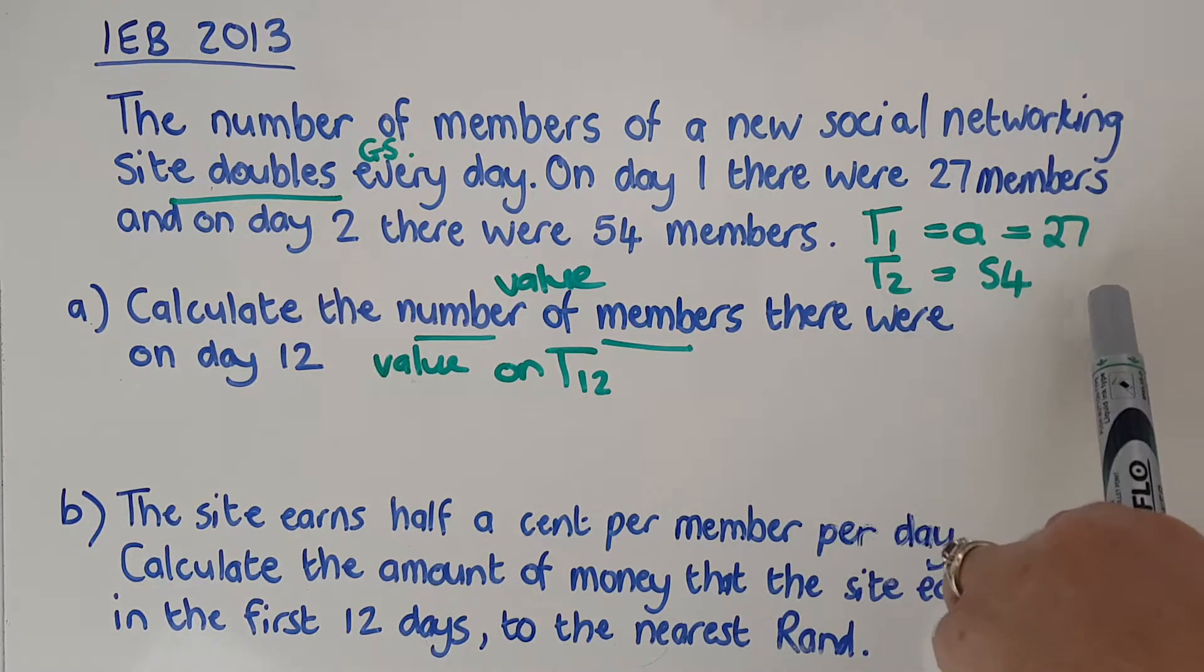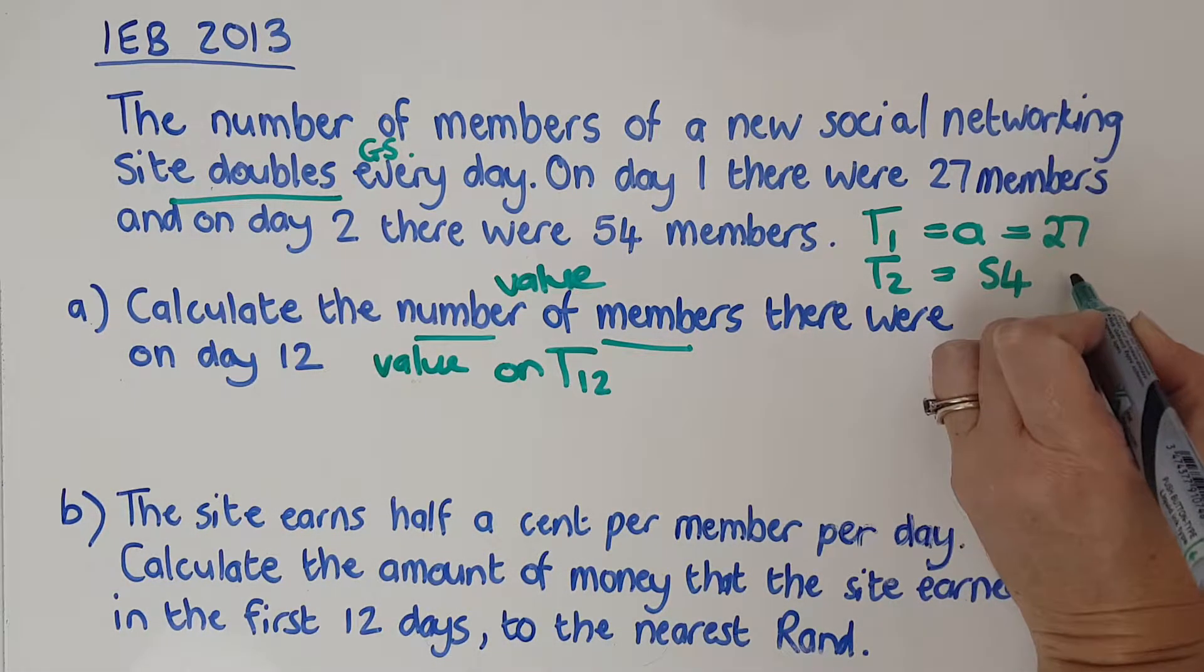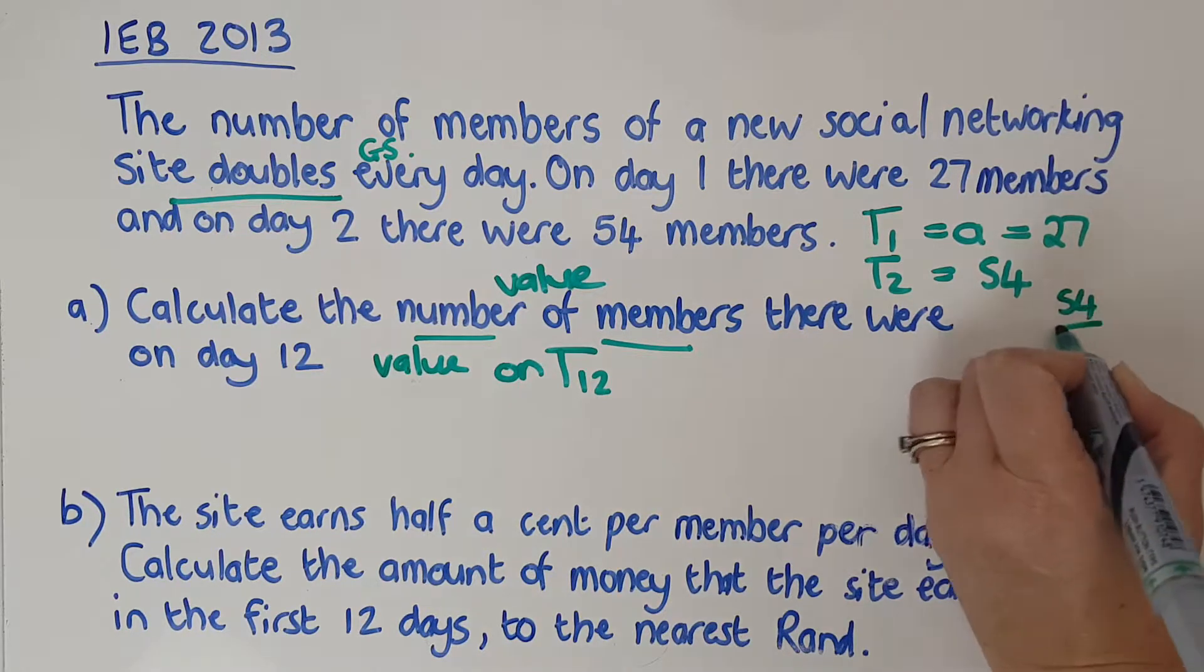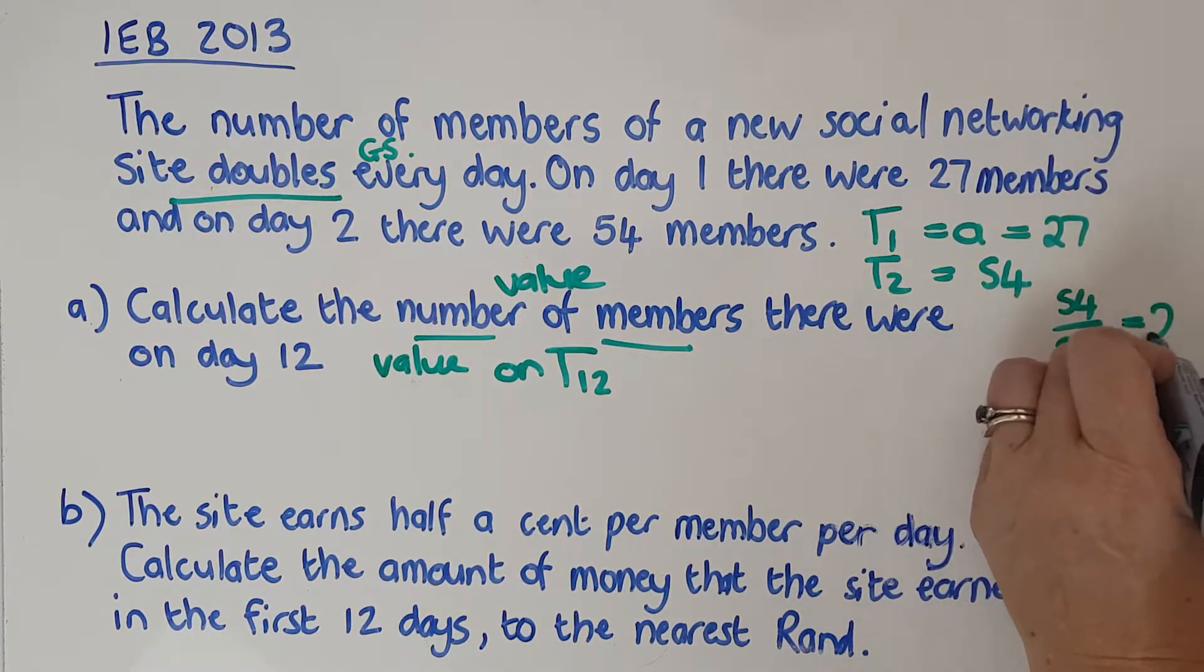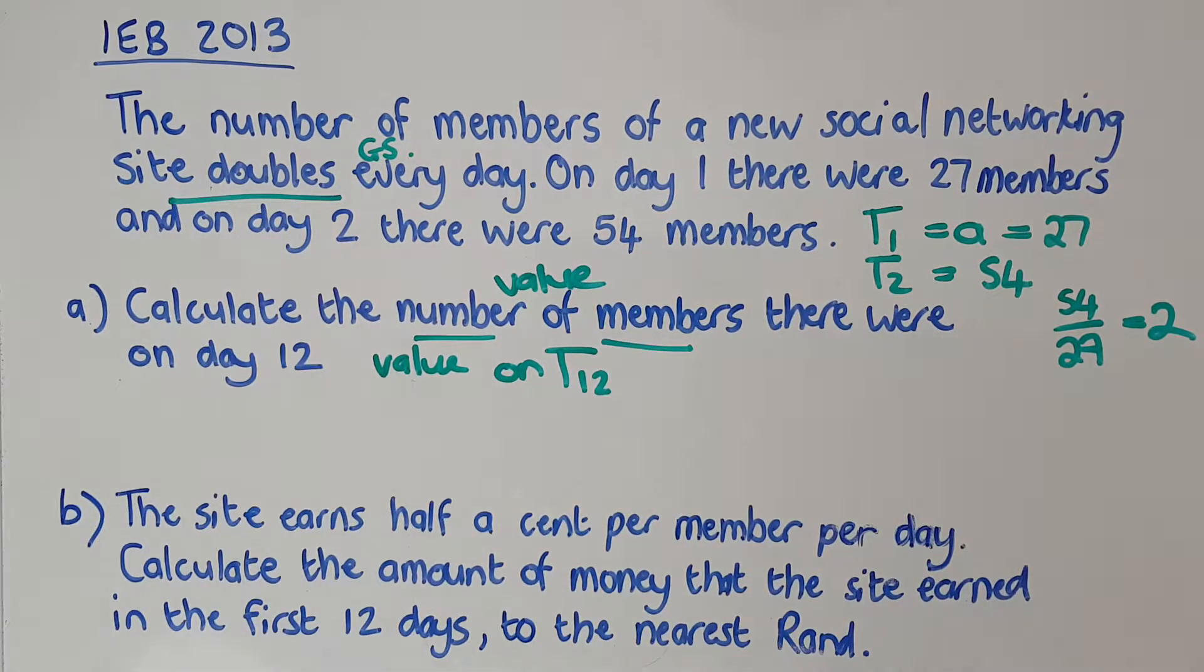My A is 27. It's just a quick calculation. T2 over T1 is 54 over 27, which is 2. I could have gotten that from the word doubles. So R is 2. I'm going to go straight into the calculation.